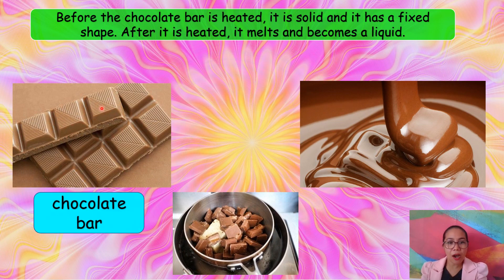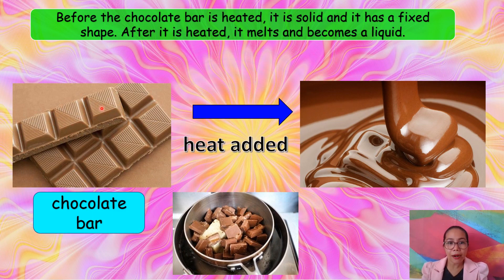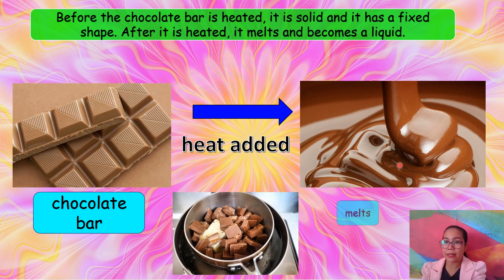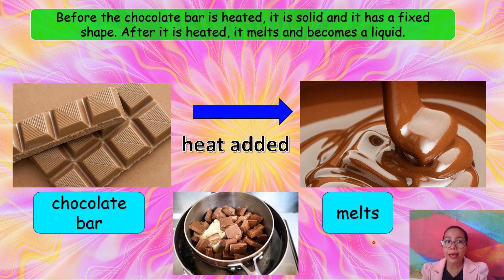This is a chocolate bar. It's hard. But when heat is added or you cook it, the chocolate bar melts. Before the chocolate bar is heated, it is solid — it has a fixed shape. After it is heated, it melts and becomes a liquid.